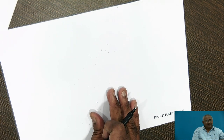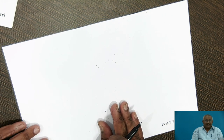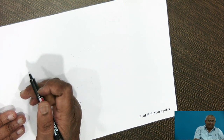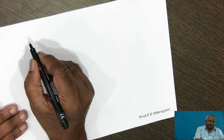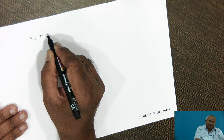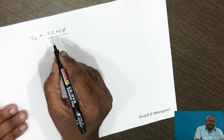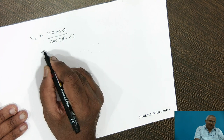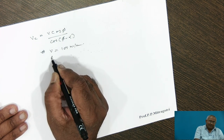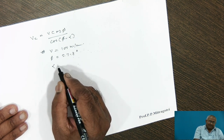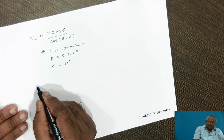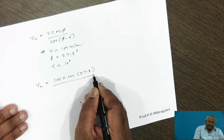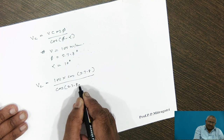After knowing the shear angle, we use formulas to calculate chip velocity and shear velocity. The formula for chip velocity is Vc equals V cos phi divided by cos of phi minus alpha. With V equal to 100 meters per minute, phi equal to 27.8 degrees, and alpha equal to 10 degrees, Vc equals 100 into cos 27.8 degrees divided by cos of 27.8 minus 10.